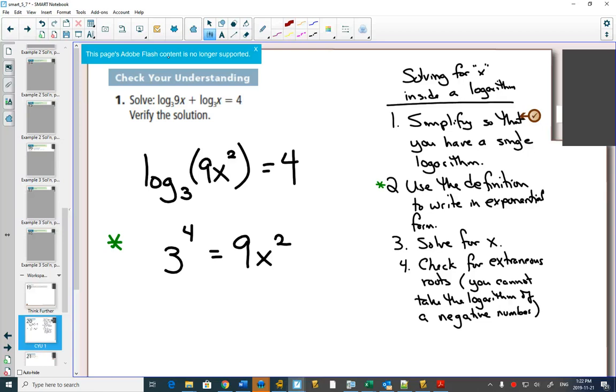That green asterisk step is the most important step because it changes it from something that you're not comfortable in solving, which is a log equation, into something more familiar. You've solved x² equations tons.